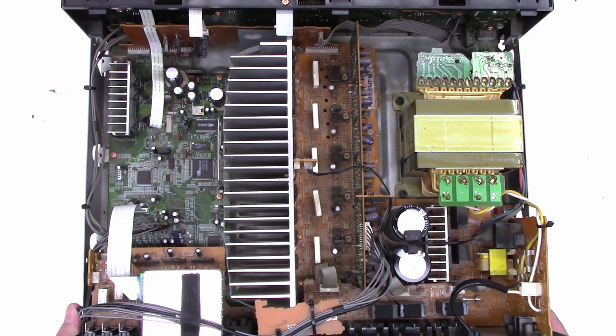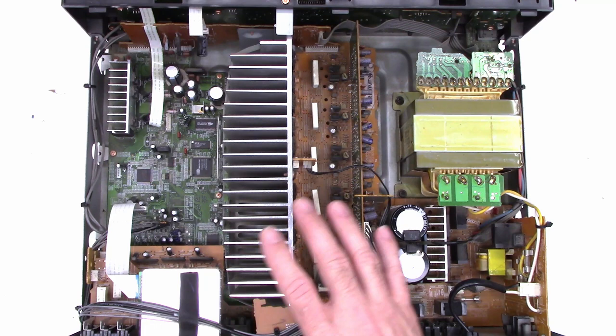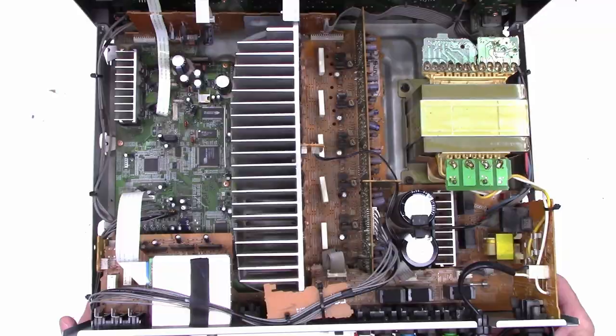I'm going to save all the circuit boards to possibly rob parts off of in the future. So let's go ahead and get the back panel off of this thing. There's probably 50 screws back here that need to come out. We'll get the boards out of here and strip everything off.